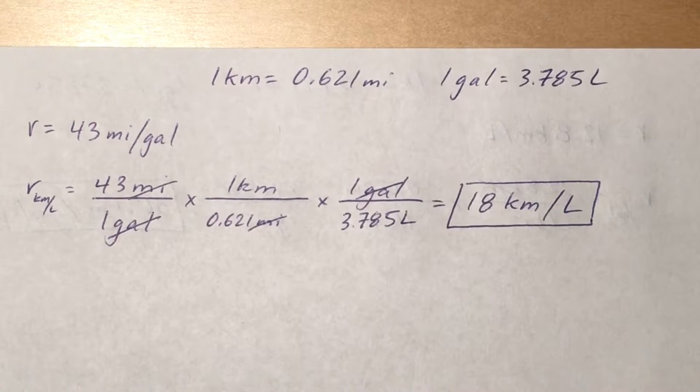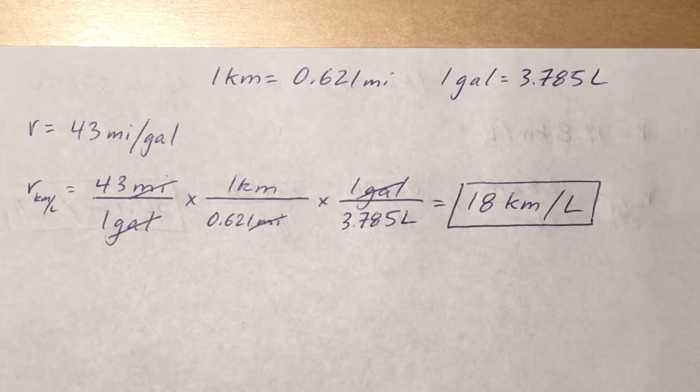So in order to do that you're going to need two conversion factors: one kilometer equals 0.621 miles and one gallon equals 3.785 liters. From there it's pretty straightforward.